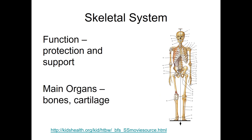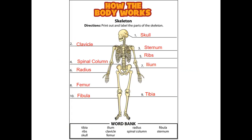Let's begin with the skeletal system. It's for protection and support. Protection because your skull protects your brain and your rib cage protects your heart and lungs. Support because it gives you your shape and holds you up. It's made of bones and cartilage. On the next slide you have a bunch of examples of bones — feel free to hit pause if you need to copy them.